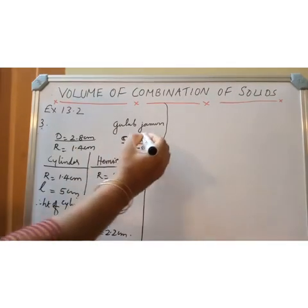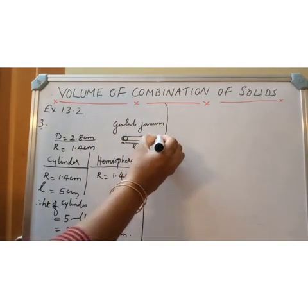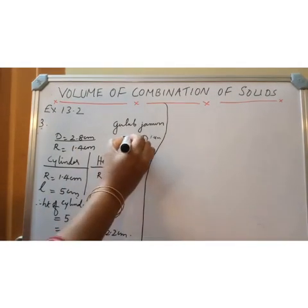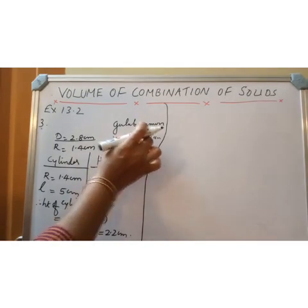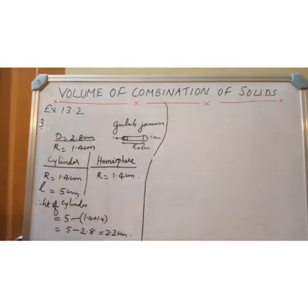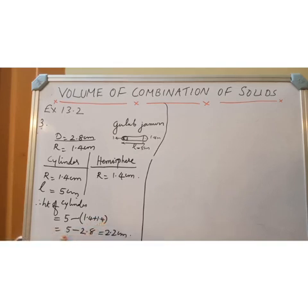So here radius is 1.4 cm, and at the other hemispherical end also 1.4 cm. What will be the height or length of the cylinder? That is 5 minus the total of the two hemispheres: 5 minus 1.4 plus 1.4, that is 5 minus 2.8, we get 2.2 cm.